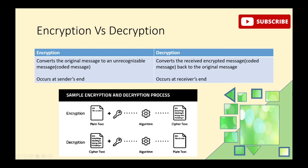What is encryption? Encryption converts the original message into an unrecognizable or coded message. It is a process where information is converted into a coded format. When we write a plain text message, encryption converts it into a coded message known as ciphertext. Encryption is the process where plain messages are converted into an unrecognizable format as ciphertext.